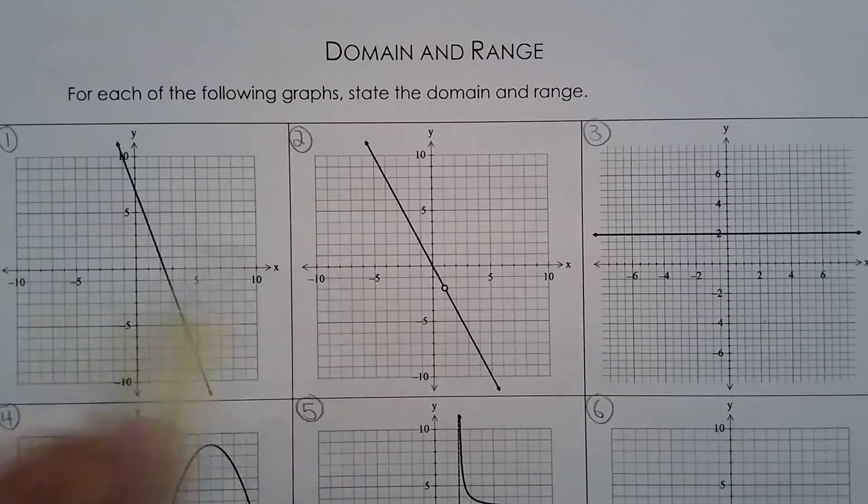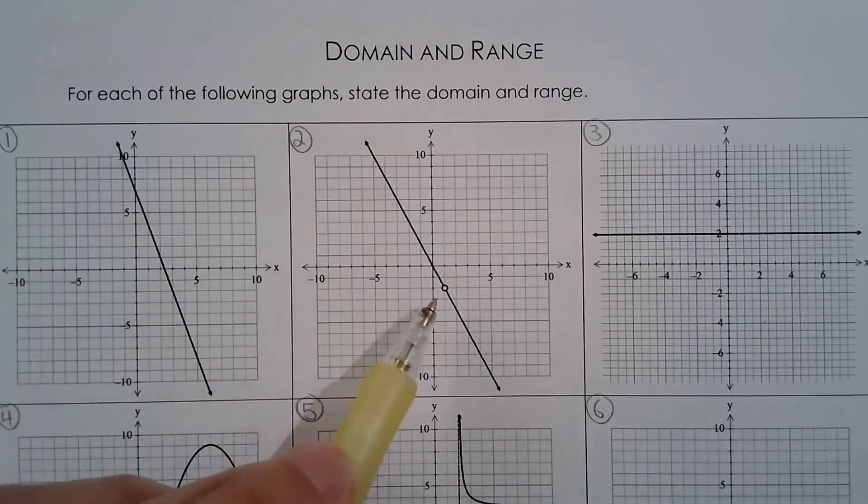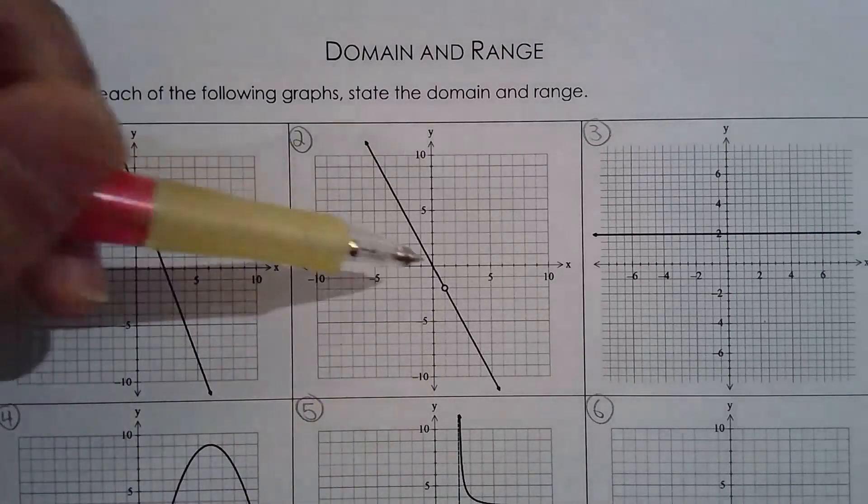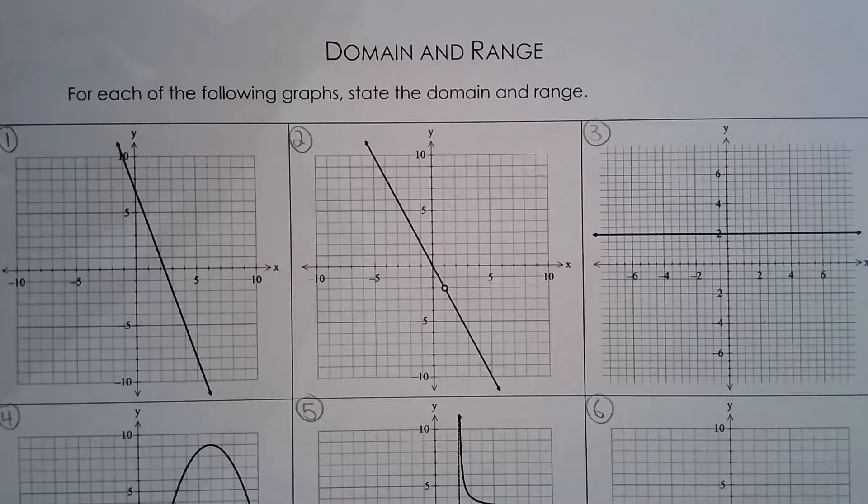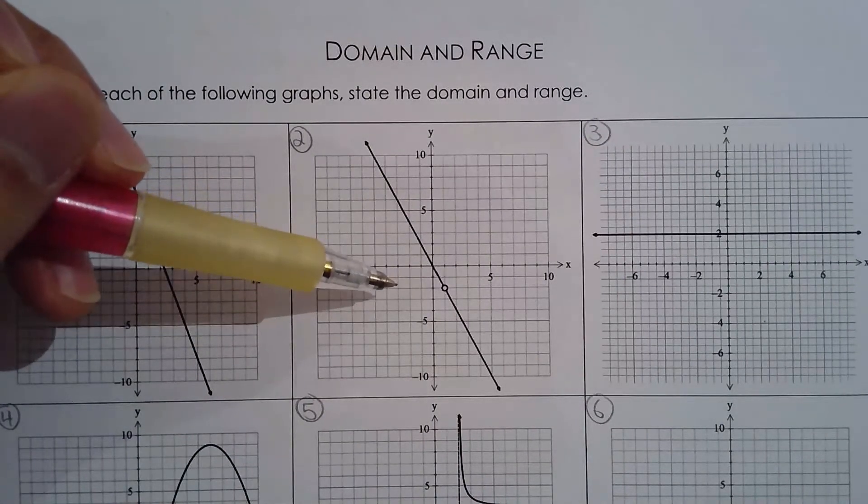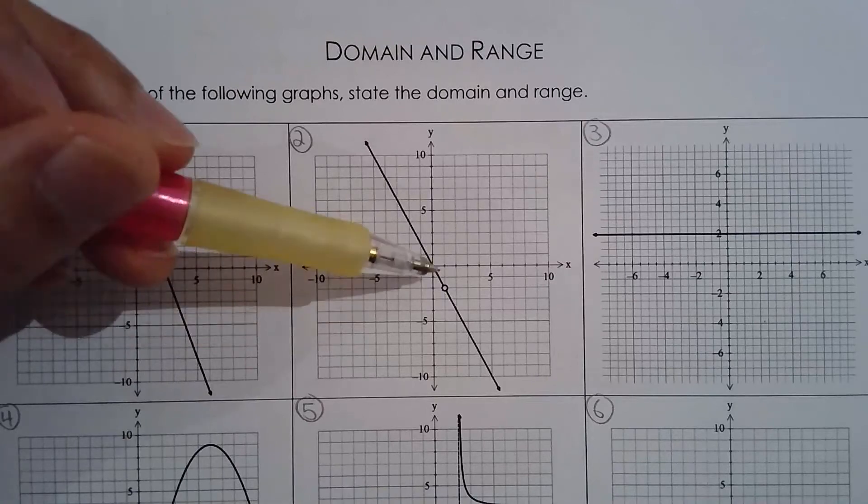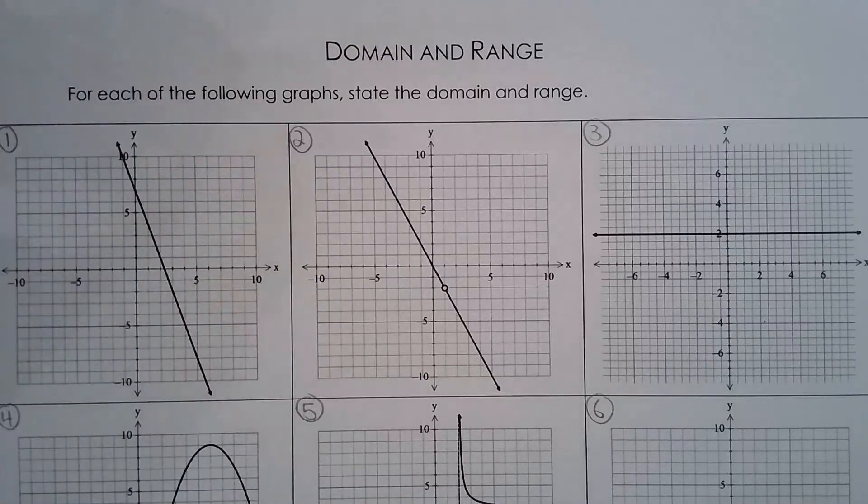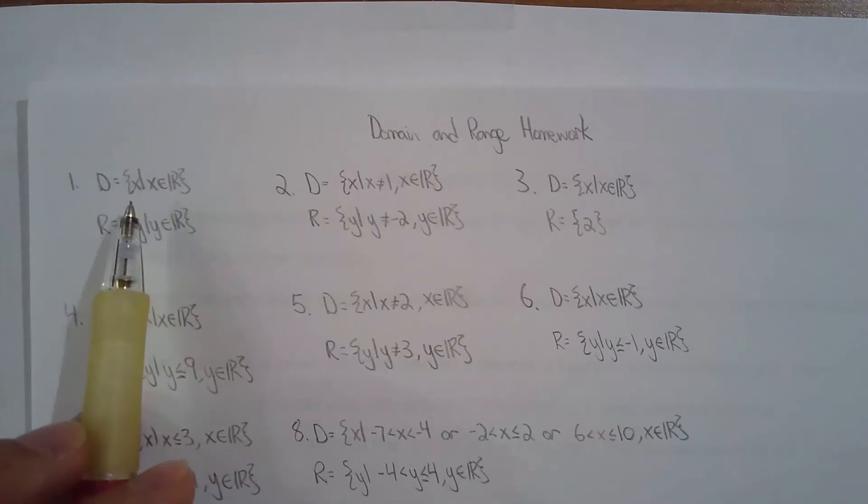For the first graph and second graph I tried to make them look really similar, but for the second graph you have this open circle which means that point does not exist, which means now you have a restriction on your domain and your range. X for example can't be one and Y can't be equal to negative two. So for the domain, all real numbers, and for range, all real numbers. But for the second question, X can't be one and Y can't be negative two.